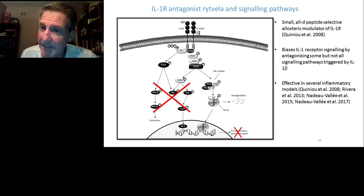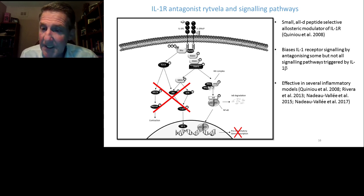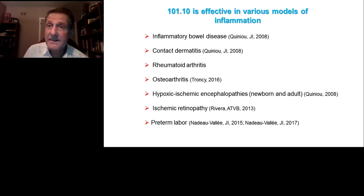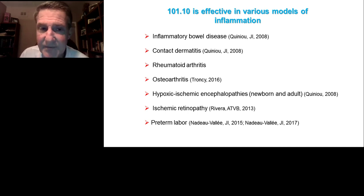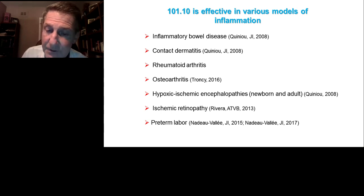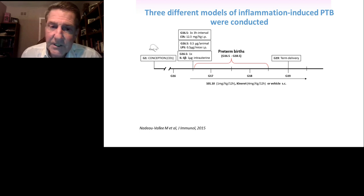Hence, this small all-D peptide is a selective biased signaling allosteric modulator of the interleukin-1 receptor, and it's also effective in several inflammatory models. Based on this pronounced efficacy on the MAP kinase and Rho kinase pathways while preserving NF-κB, 101.10 was shown to be effective in inflammatory bowel disease, contact dermatitis, rheumatoid arthritis, osteoarthritis, hypoxic ischemic encephalopathies of the newborn and the adult, ischemic retinopathies, and in preterm labor. From slide number 18 onwards, I will focus on preterm labor.